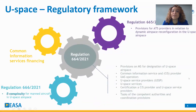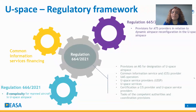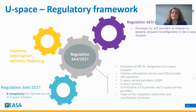The U-Space regulatory framework is composed of four pieces of legislation. Three of them have already been adopted by the European Commission. Those are Regulation 664/2021, which contains all the requirements for U-Space in relation to the U-Space airspace, the U-Space services, the common information service provision, the UAS operators, as well as the requirements for certification of the U-Space and common information service provider, as well as the member states.